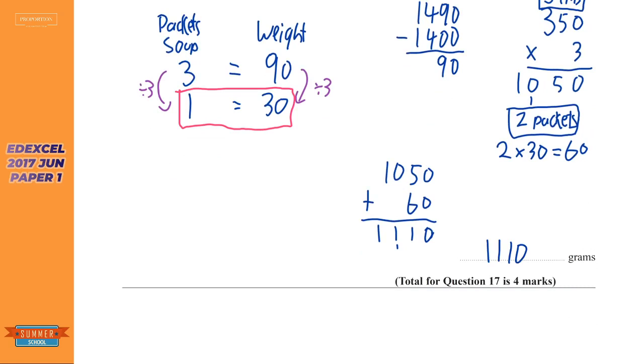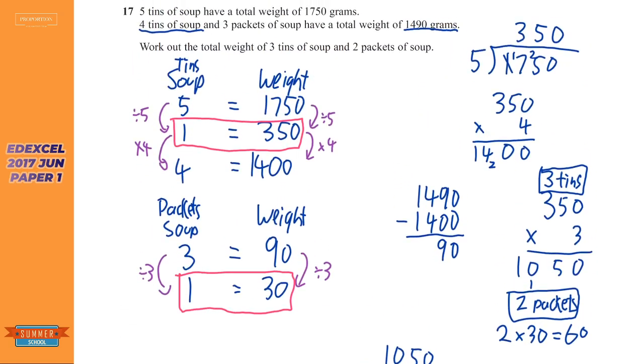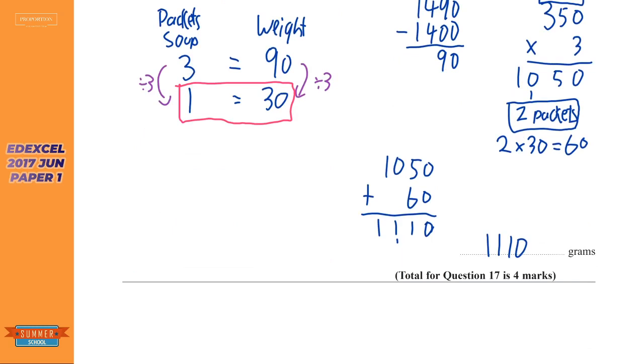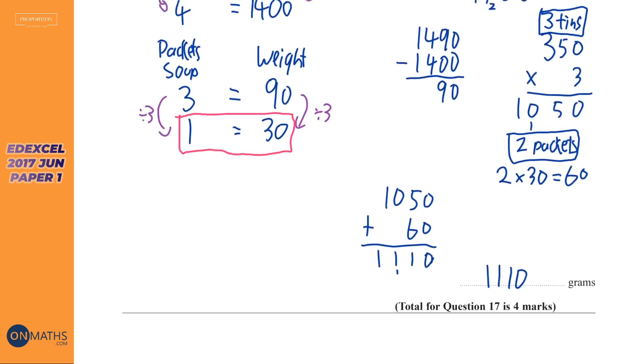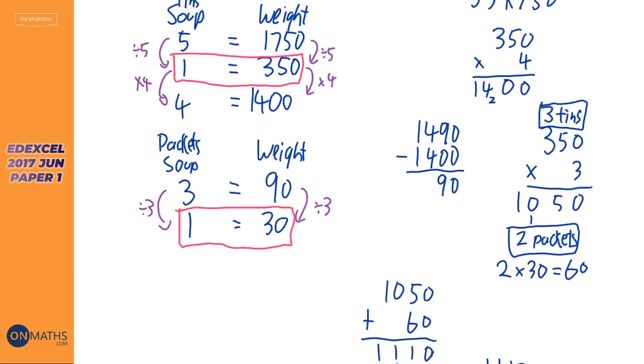Pretty complicated question, really. Loads and loads of steps. But you've just got to do it a bit at a time. Just work out what you can. And it's one of these questions that's worth four marks and you probably get a mark very quickly. Probably just for doing 1,750 divided by five would get you a mark. And the second mark is slightly harder to get the third mark. You probably have to almost finish the question. And obviously for the fourth mark, you need the correct answer and the correct working out.